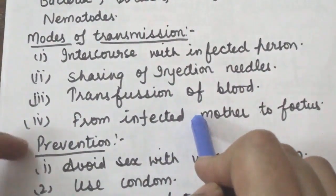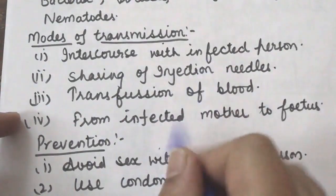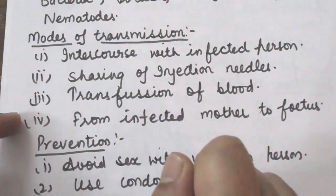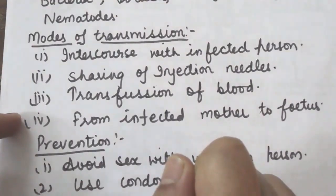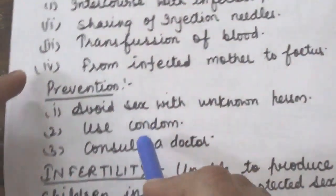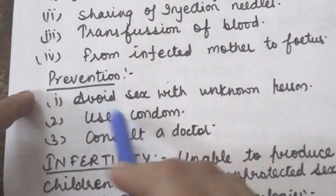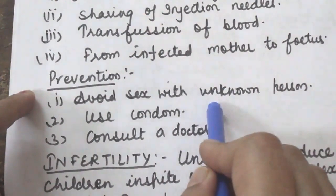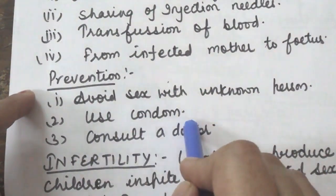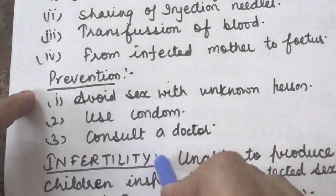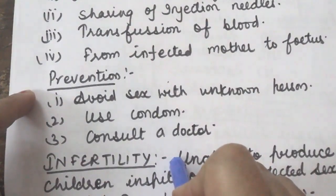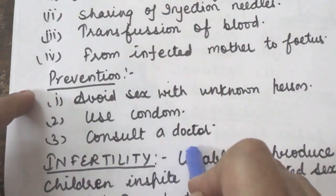Now, how can we prevent STDs? The Government of India has recently initiated special reproductive health care programs to prevent early occurrence, early detection and cure of STDs. The preventive measures are: avoid sex with unknown or multiple persons, always use a condom during intercourse, and in case of doubt, consult a qualified doctor without delay.